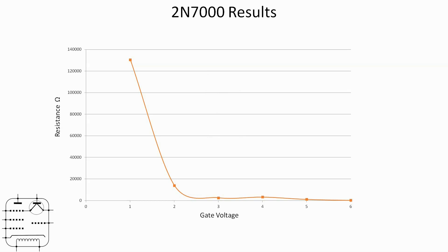Let's go back to the bench and look at a slightly different MOSFET. The 2N7000 is a relatively low-power device, and I want to use a slightly higher-power device — the IFRZ44. Let's go to the bench and see how that one checks out.